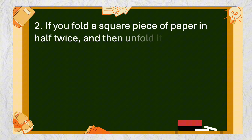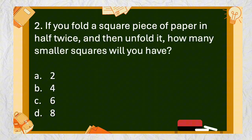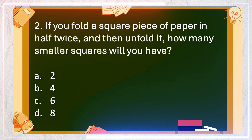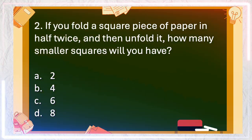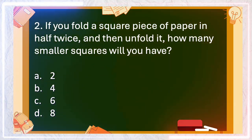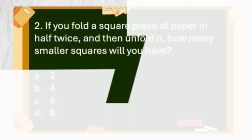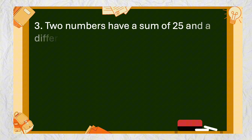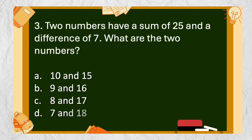Number 2: If you fold a square piece of paper in half twice and then unfold it, how many smaller squares will you have? A. 2, B. 4, C. 6, D. 8. The answer is B. 4.